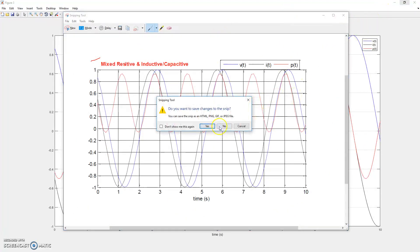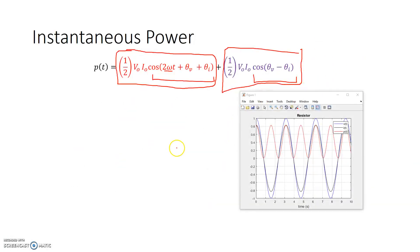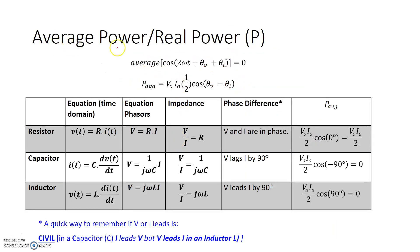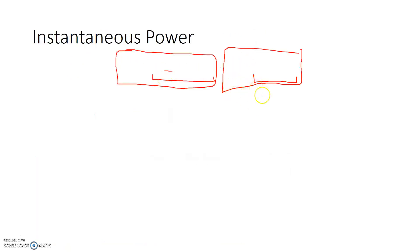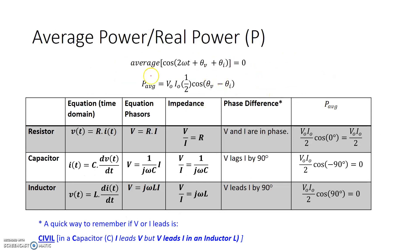Going back to our instantaneous power expression, the DC component — (v0·i0/2)·cos(θ_v − θ_i) — is the average power. The term cosine(θ_v − θ_i) has a special name: it is called the power factor, which we'll discuss in just a second.